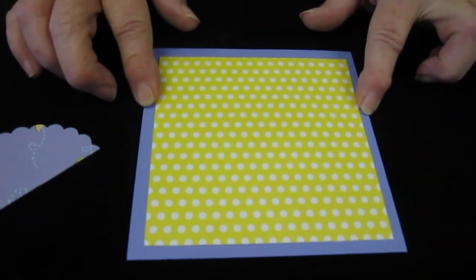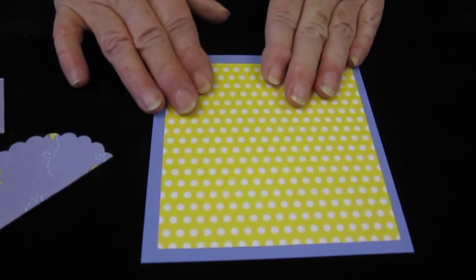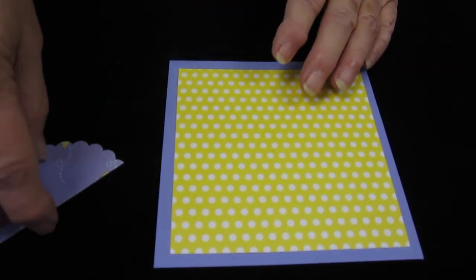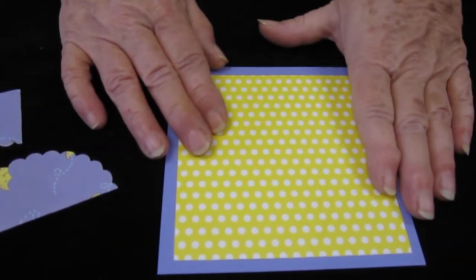So what we have here is our card. We have a five by five card base and a four and three quarters piece of scrapbook paper that's going to go with your color scheme, and we have taped the two of them together.